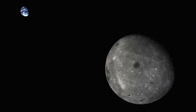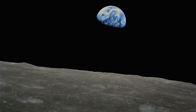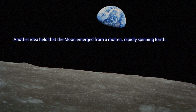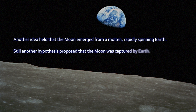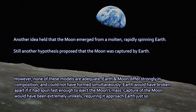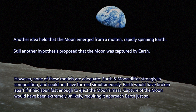Another idea — an early one that was quickly discarded — was that perhaps when the Earth formed, it was spinning so quickly that it budded off the Moon, sort of splashed the Moon out. But that doesn't work either, because if you try to work out the geophysics, the Earth would simply splash apart — it would fly apart.